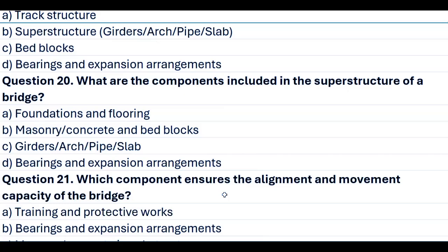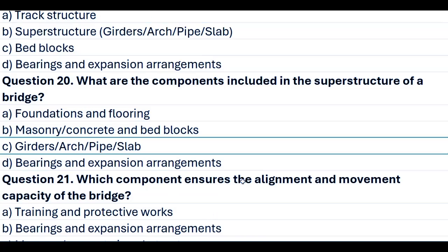Question 20. What are the components included in the superstructure of a bridge? A. Foundations and flooring. B. Masonry concrete and bed blocks. C. Girders, arch, pipe, slab. D. Bearings and expansion arrangements. Answer C. Girders, arch, pipe, slab.